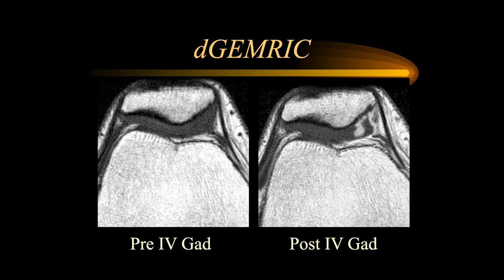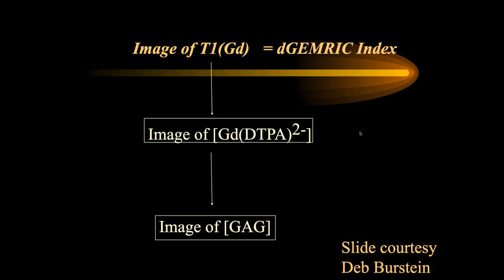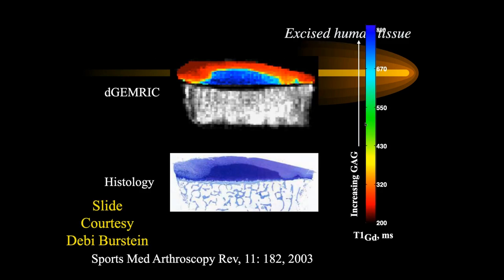This study, not using the full dGEMRIC protocol, just gave IV contrast with a delayed scan and showed a focal area of cartilage enhancement where negative charge from glucosaminoglycan was lost. You can then calculate an index controlling for other variables. In the dGEMRIC color map, red shows loss of glucosaminoglycan and blue shows increasing glucosaminoglycan.